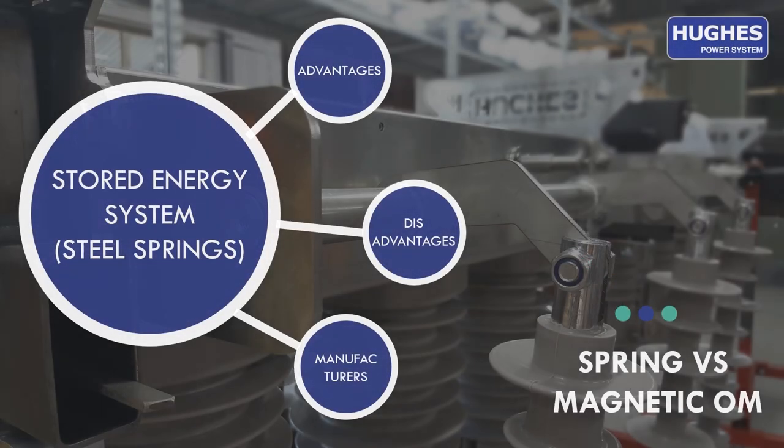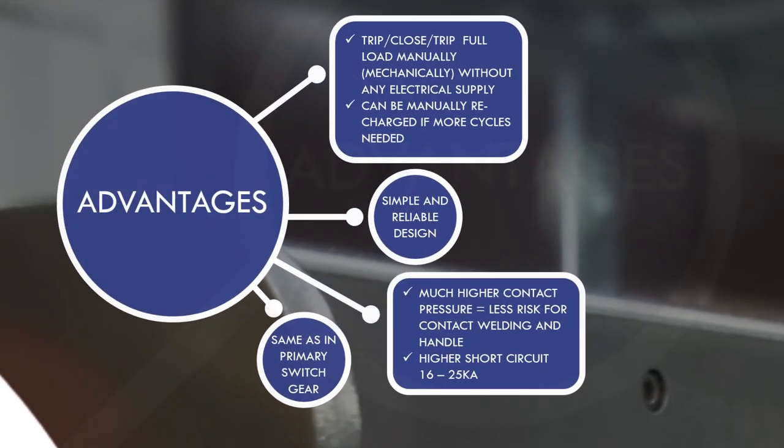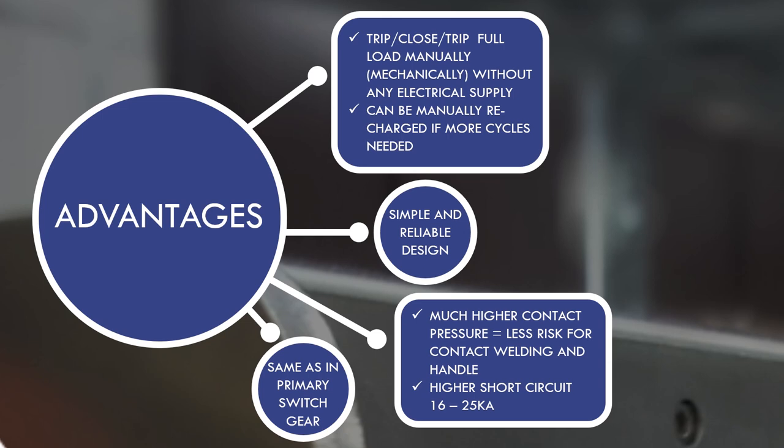Let's have a closer look at first type: spring operating mechanism, also called stored energy system. Basically, the biggest advantage is that you can still operate your switch module as many times as needed in case a protection relay is damaged or stolen. Operation trip-close-trip can be performed with full load manually with the help of hook stick without any electrical supply. It can be also manually recharged with the same hook stick as many times as needed. Next advantage is that it has a simple and very reliable design. Much higher contact pressure, which is equal to less risk for contact welding and handle, and higher short circuit with a range from 16 to 25 kA.